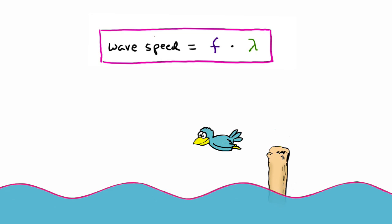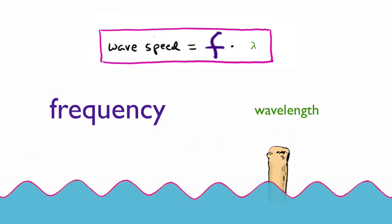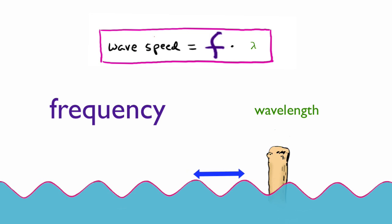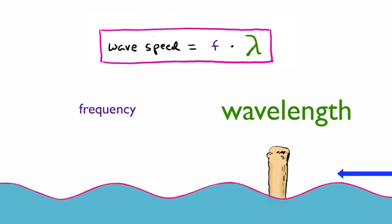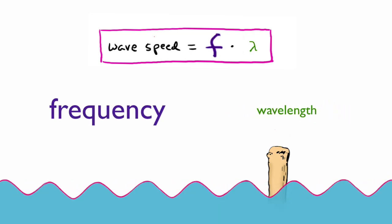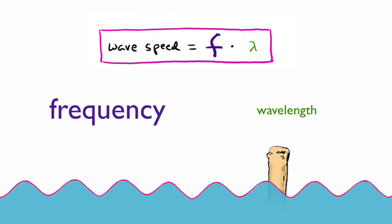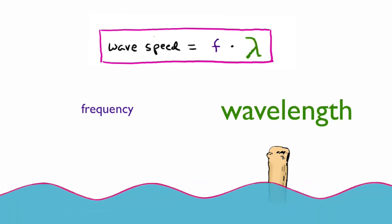What's fascinating is that if you have a higher frequency, that necessarily means a shorter wavelength, and a lower frequency necessarily means a longer wavelength. Frequency and wavelength are inversely proportional to each other. You can't make one bigger without the other getting smaller. But notice that the product of the two remains the same.